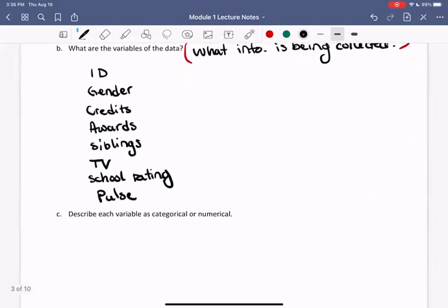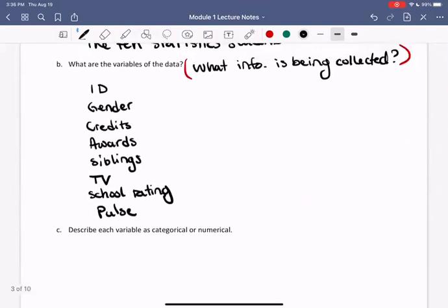So part C says, we'll describe each variable as categorical or numerical. So I want you to pause the video right now and try to answer this question for yourself. Look over each of these variables and then determine if that variable is categorical or numerical. Feel free to flip back to the table to help you out here.